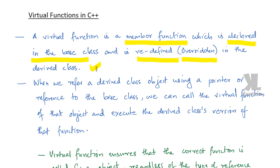When we refer a derived class object using a pointer or reference to the base class, we can call the virtual function of that object and execute the derived class version of that function.